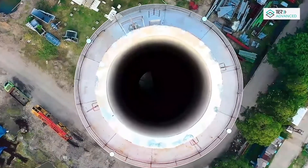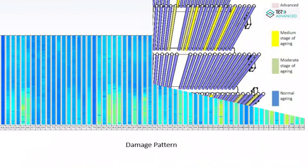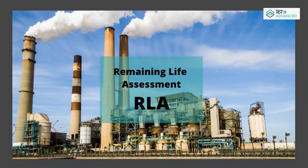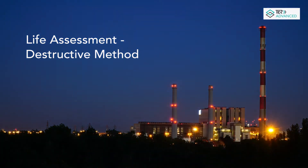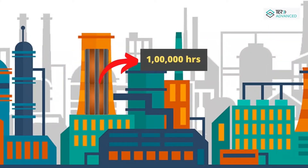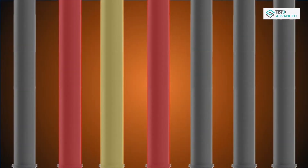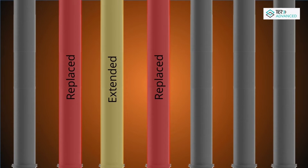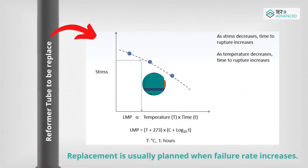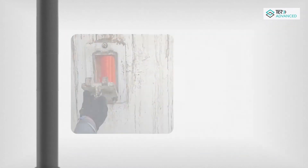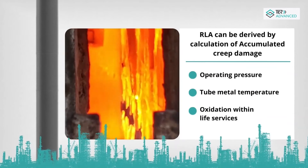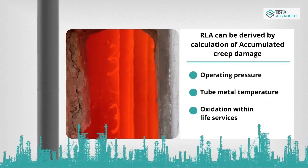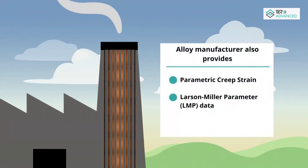Remaining life assessment (RLA) for reformer tubes is conducted to understand the damage mechanism that causes failure. There are two approaches: destructive and non-destructive. Reformer tubes are generally designed for one lakh hours; at the end of the period, tubes are either replaced or extended as per condition. RLA can be derived by calculation of accumulated creep damage based on operating pressure, tube metal temperature, and oxidation. Alloy manufacturers also provide parametric creep strain and Larson-Miller Parameter (LMP) data for assessment.